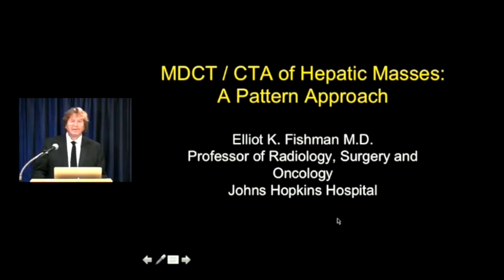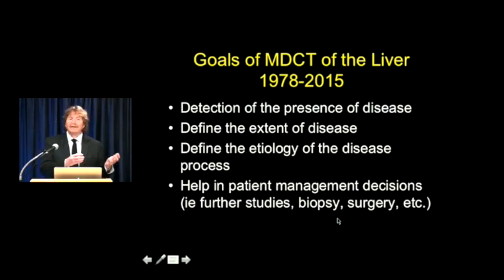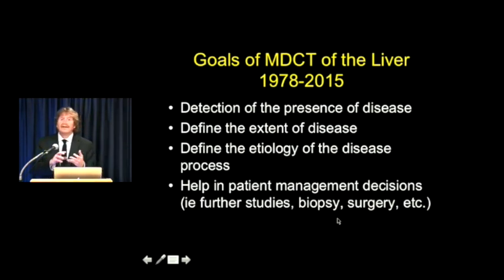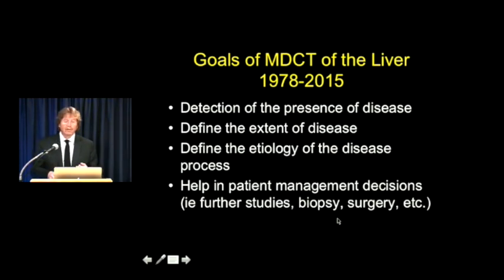Hi, this is Elliot Fishman, and welcome to our talk on CT of Hepatic Masses, a Pattern Approach. One of the things we recognize amongst the classics of CT is that evaluating the liver is one of the classic things we've always done, and it's been a very important part of CT. What are we doing when you look at CT of the liver? You're looking for the presence of disease, trying to define the extent of disease, looking for the etiology of the disease process. You see a mass - what is it? And you help in patient management decisions: does this patient need surgery, a biopsy, or is it a leave-alone lesion?